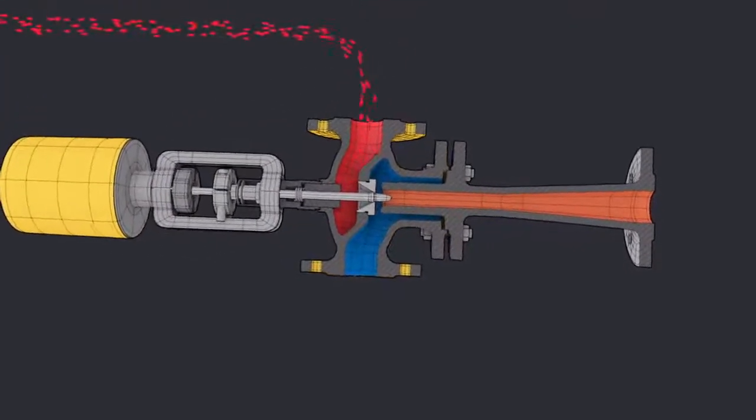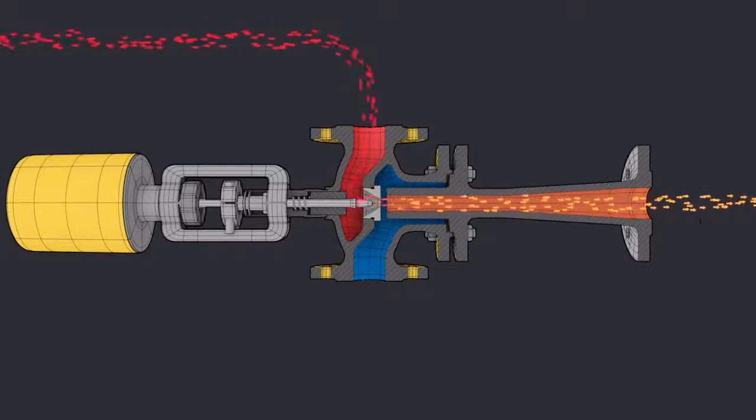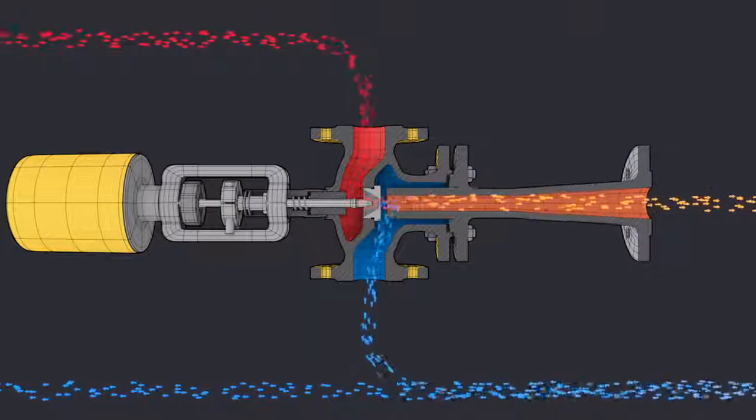Heating water flows in and is accelerated where the nozzle tapers down. The increased flow velocity causes a local drop in pressure so that return water can be drawn in.